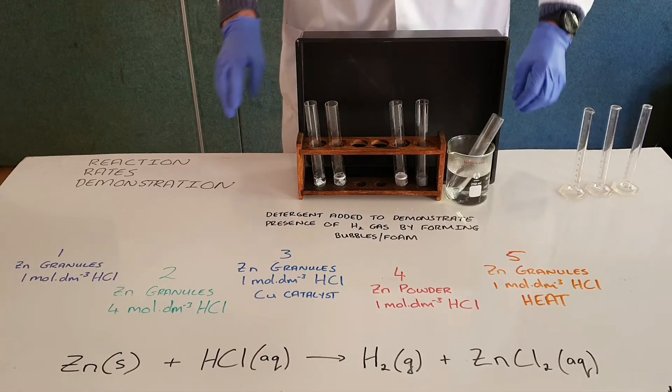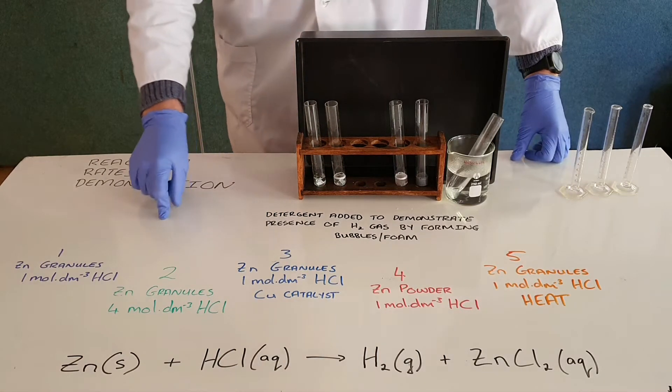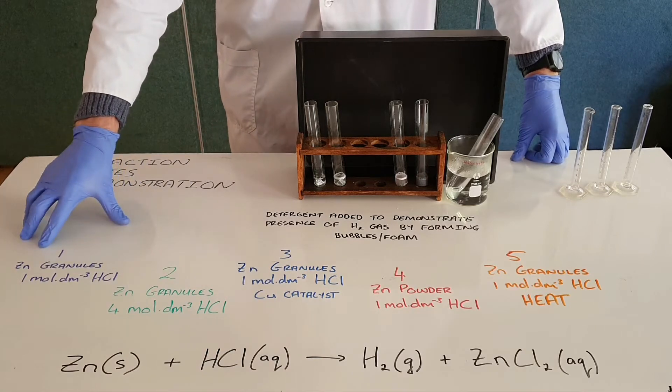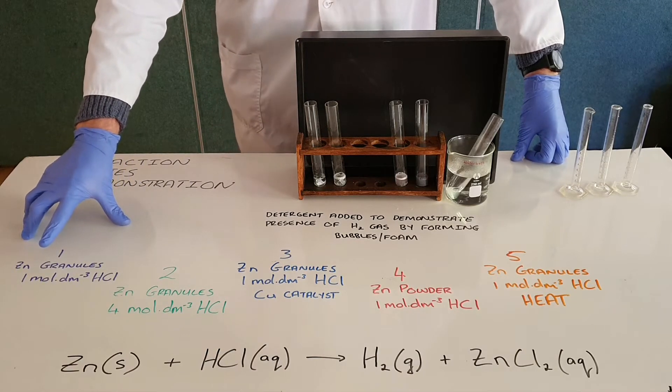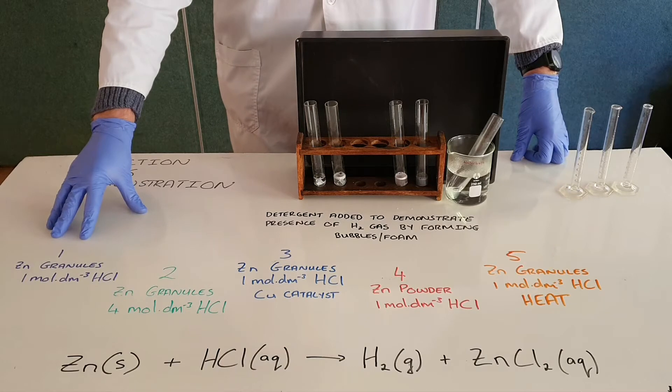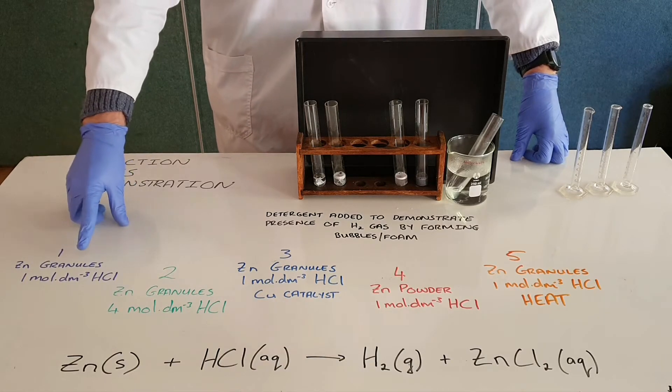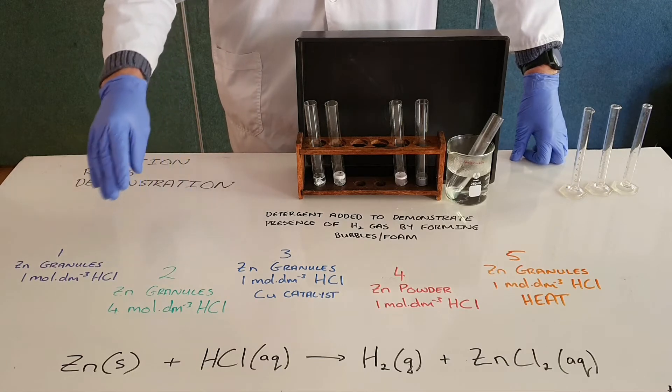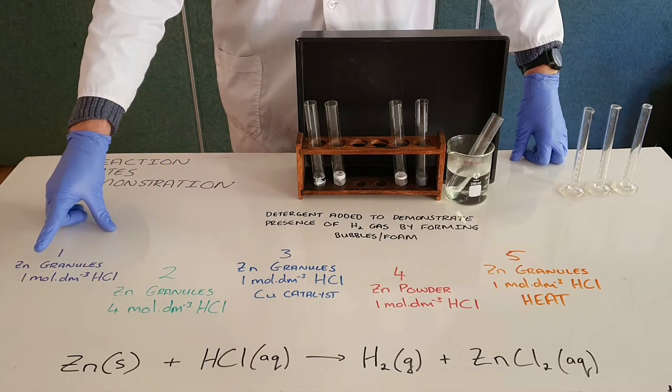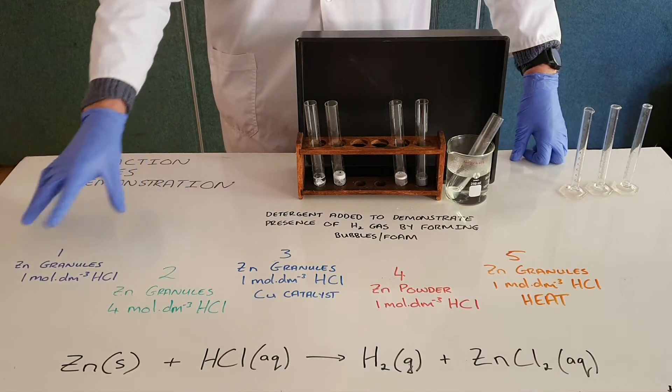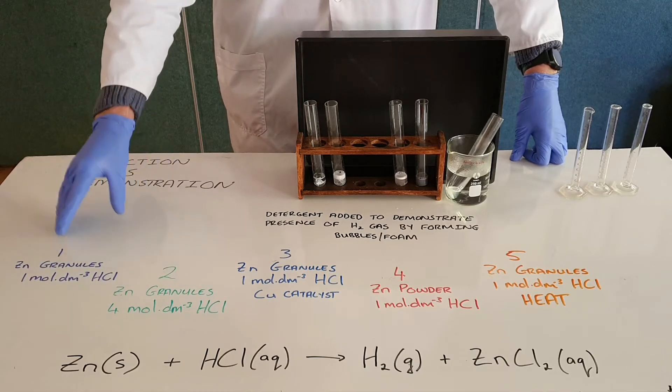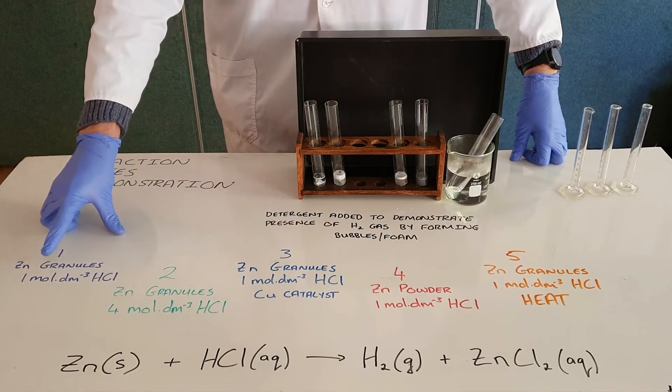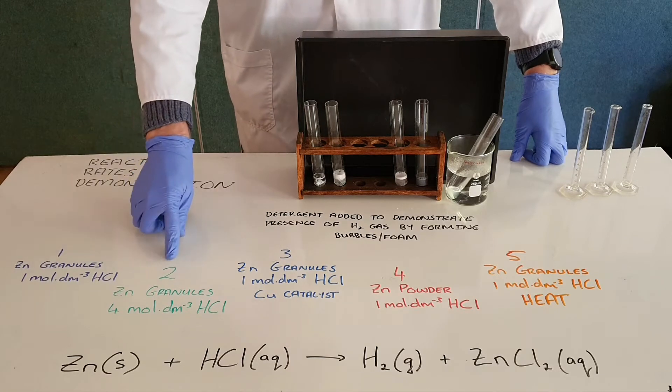Now what we would expect to see is that our first reaction here, zinc granules with one molar hydrochloric acid, we expect this to be our control reaction. As you can see there are granules in all but one of the reactions and there's one molar hydrochloric acid in all but one of these reactions, so this should be a control and we can monitor how much foam is formed in this reaction.